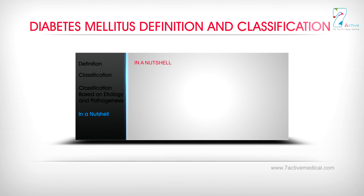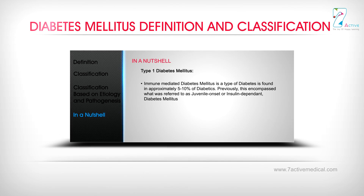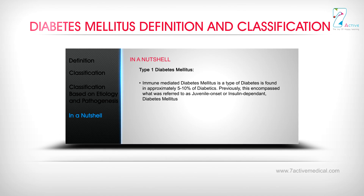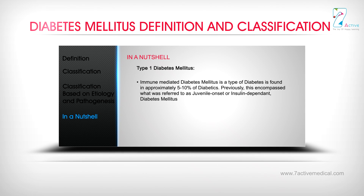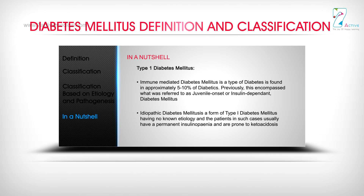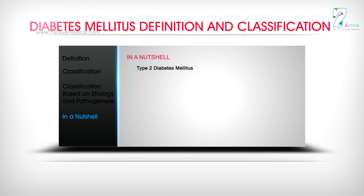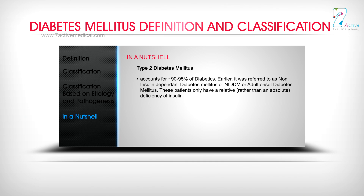In a nutshell — Type 1 diabetes mellitus: Immune-mediated diabetes mellitus is found in approximately 5–10% of diabetics. Previously, this encompassed what was referred to as juvenile-onset or insulin-dependent diabetes mellitus. Idiopathic diabetes mellitus is a form of type 1 diabetes mellitus having no known etiology; patients in such cases usually have permanent insulinopenia and are prone to ketoacidosis.